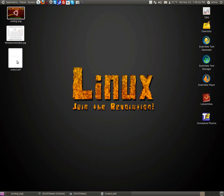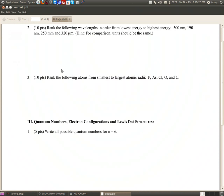Let me show you the problem that's been requested tonight. Rank the following wavelengths in order from lowest energy to highest energy: 500 nanometers, 190 nanometers, 250 millimeters, and 320 micrometers. The teacher also gives a hint that the units should all be the same.